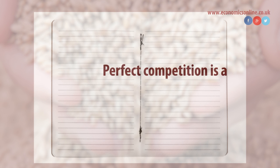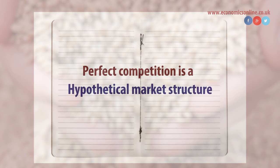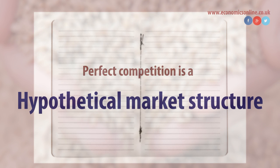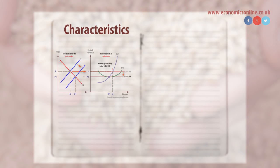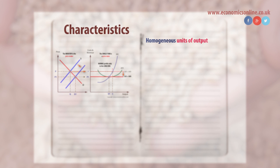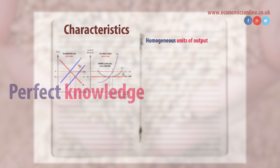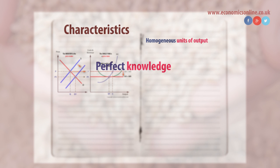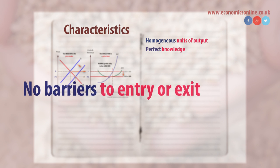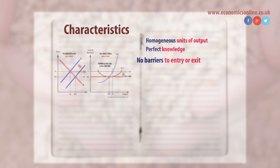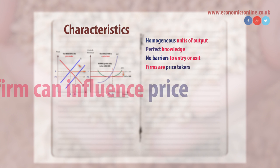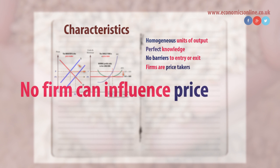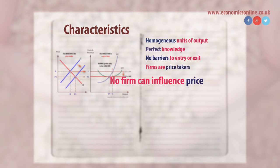Perfect competition is a hypothetical market structure. Its main characteristics are homogeneous units of output, perfect knowledge by all participants, and no barriers to entry or exit. All firms are price takers, taking the price from the market, and no single firm can influence the price.